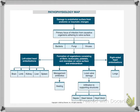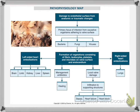When someone is infected with endocarditis, the most common organisms are going to be bacterial, and the most common bacteria is Staphylococcus aureus. Patients will develop vegetations that adhere to the valve surface or the endocardium, and that's what can cause microembolisms or larger clots to break off from these tiny areas of vegetation and move into the systemic system.